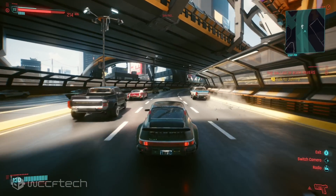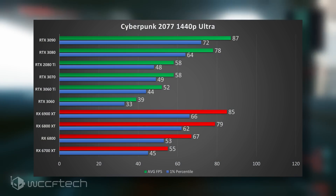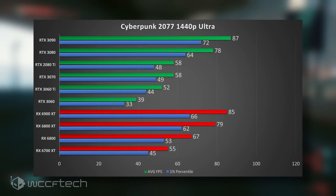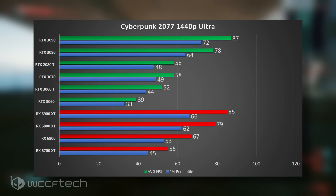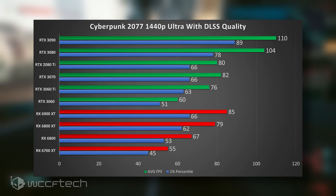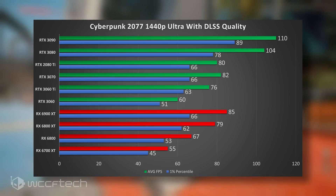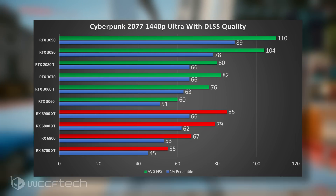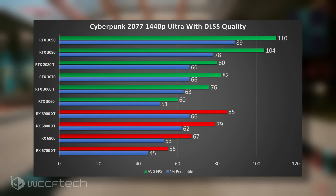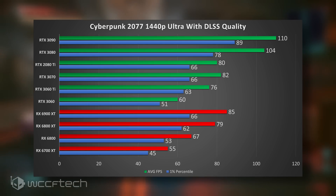At 1440p, ultra settings are noticeably more demanding for mid-range cards. The 6900 XT and 3090 are trading blows at the top, with the 3080 right there alongside the 6800 XT — it's very evenly matched when running the native game. Enable DLSS at quality mode — which at 1440p is even harder to distinguish from native than at 1080p due to the higher base resolution — and the 3090 delivers performance suited for high refresh rate monitors. Even the 3080 pushes over 100 FPS average, up from 78 FPS without ray tracing, and the 3060 hits that 60 FPS mark.